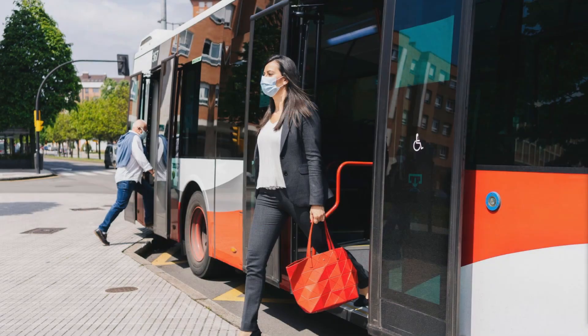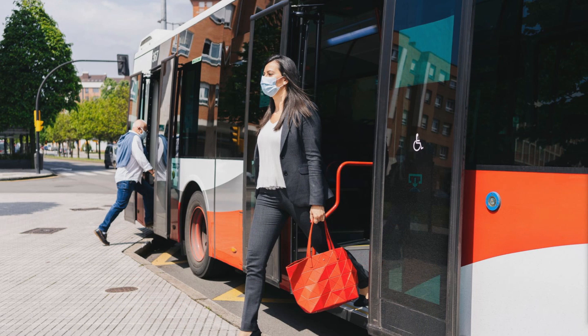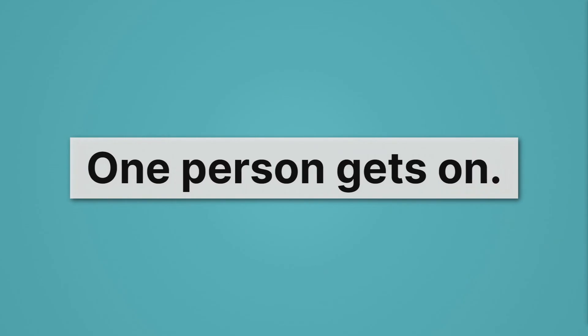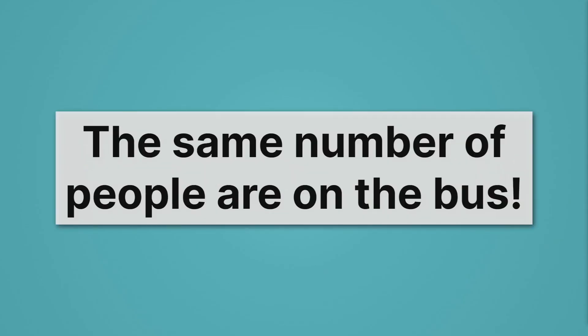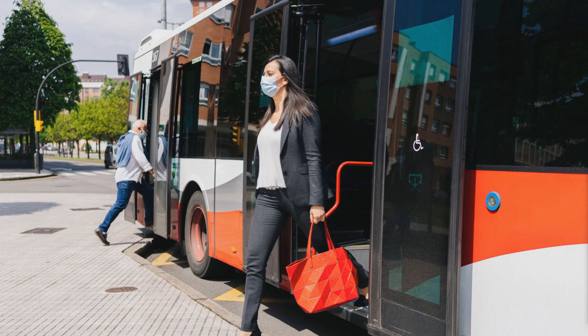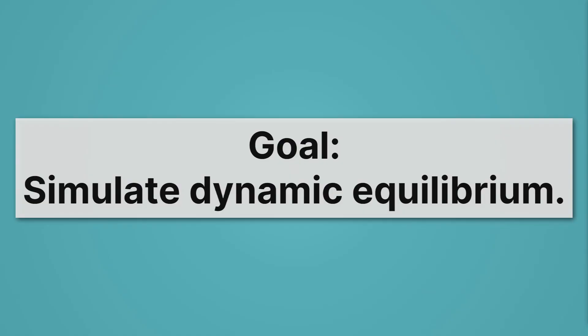What does dynamic mean? Well, it's a bit like our chemical reaction is a bus. Here we see a woman getting off the bus and a man getting on the bus — one person gets off, one person gets on, but the same number of people are on the bus. Chemical equilibrium is the same way: reactants are hopping on and products are hopping off, but the total balance is stable. The goal in this lab is to simulate dynamic equilibrium so you can really understand this concept.